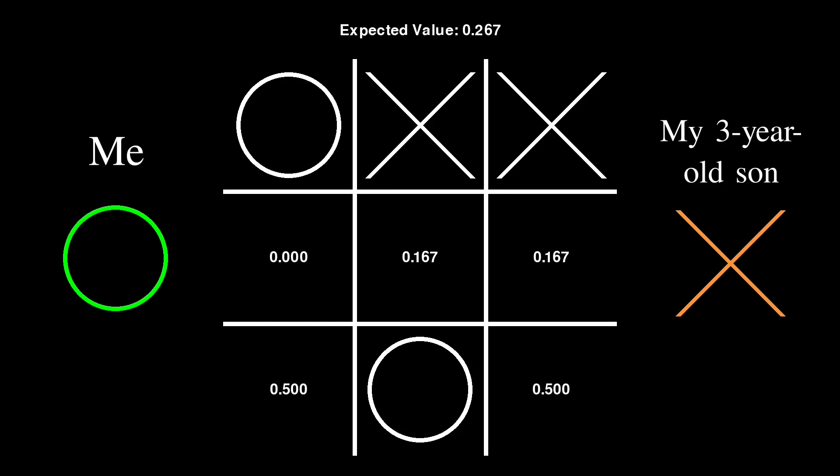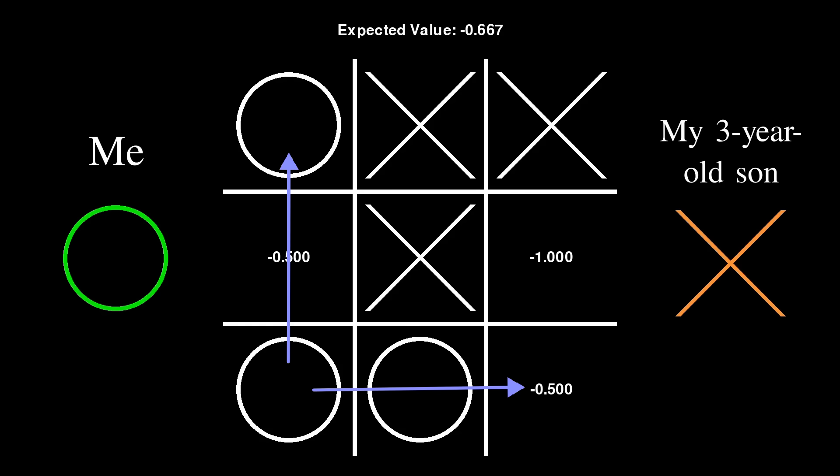Until, that is, he chose the middle square. Since I can't let him win, I have to block him in the lower left-hand corner. But alas, in doing so, I forced him into a fork and couldn't help but win the game.